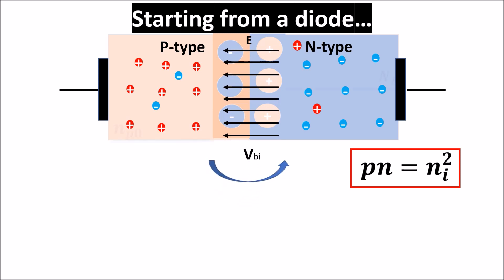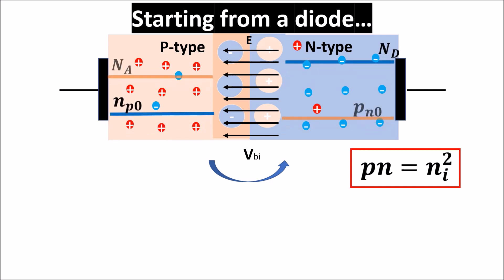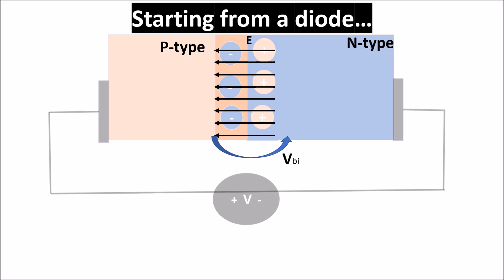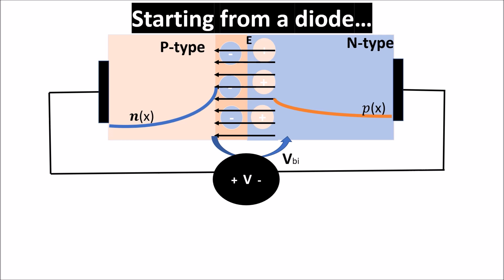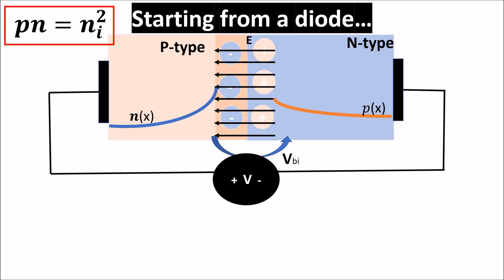This diffusion creates a depletion region without free carriers but electrically charged, thus creating an electric field and a barrier potential VBI. If we apply a voltage V to oppose VBI we have a forward-biased junction, so the depletion region gets smaller and the electric field is lower. The drift current created by the electric field can no longer oppose the diffusion current of majority carriers going from one region into the other, so majority carriers start to diffuse into the other region, becoming minority carriers.